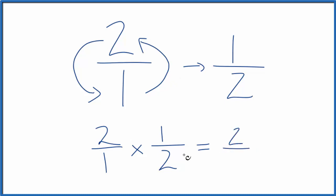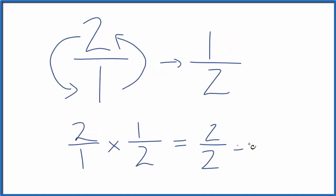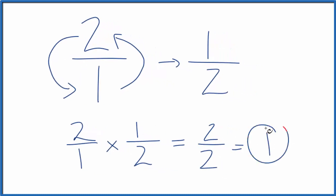2 times 1 is 2, 1 times 2 is 2, so 2 divided by 2 equals 1. We did the first part correctly. We found the reciprocal for the number 2.